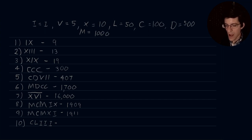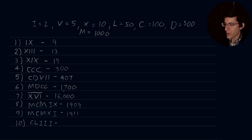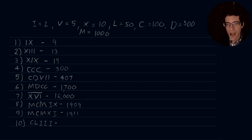Number ten, CLIII: we take our C value of 100, and then our L value is 50. L is less than 100, so we add it — L is added to C. Then our three I values are also less, giving us 150 plus 3, which is 153.